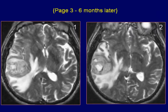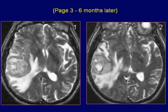Follow-up MRI examination of the same patient: axial T2-weighted images demonstrate the lesion as a heterogeneous area with significant interval growth in size. There is marked associated vasogenic edema and mass effect.